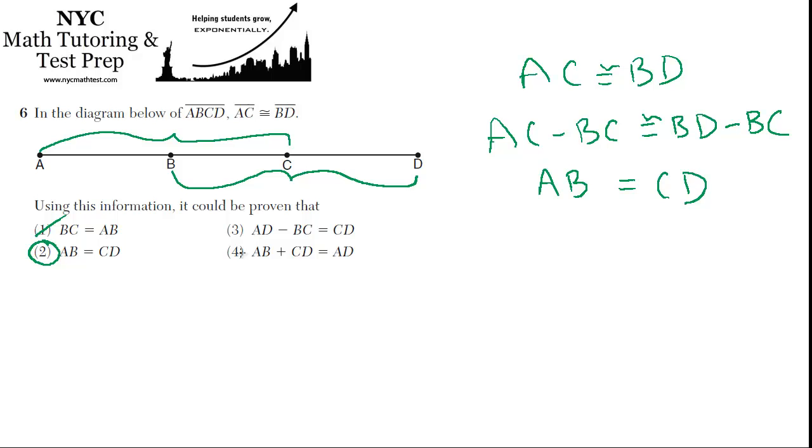Now let's just take a look at the others and make sure they don't fit. AD, the whole length, minus BC, the middle part, equals CD. No, that's not true, right? It would have to be AB plus CD. And AB plus CD, left plus the right, equals AD. Now that leaves out the middle, so that doesn't make sense. Best choice is two.